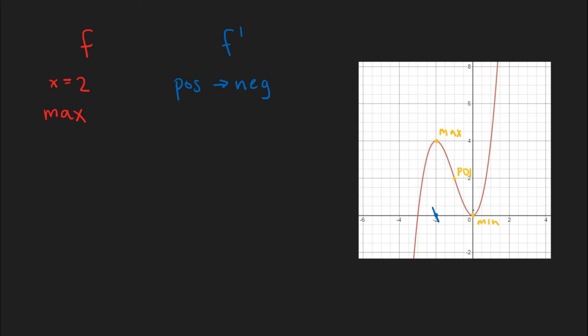We'll do the same thing for the minimum when x equals 0. To the left, y is decreasing, so the slope is negative. To the right, y is increasing, so we know the slope is positive. The slope goes from negative to positive, so we know that on the f' graph, the line will look like this.